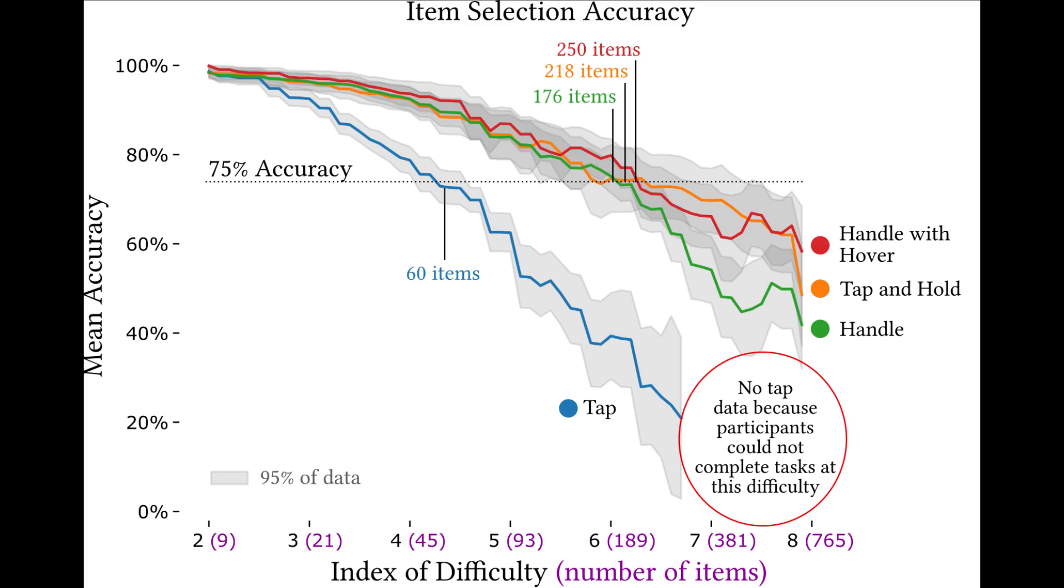Within the three techniques with visual feedback, the handle with hover technique that provides positional and item level feedback performed best. But we did not find a significant difference in our hypothesis testing.